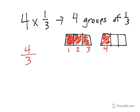What we know about multiplication is 4 times 1 third is the same thing as saying 4 times 1, keeping your denominator, which is equal to 4 thirds.